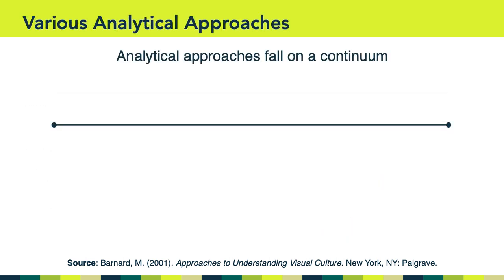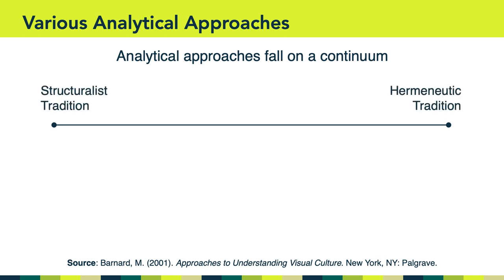Callow helped us understand that there are various approaches to analyzing and thinking about images in visual culture. Drawing on the work of Bernard, Callow argued that all analytical approaches fall on a continuum. This continuum is anchored by the structuralist tradition on one end and the hermeneutic tradition on the other. Some of you may be unfamiliar with these terms, but don't let the vocabulary throw you off. They're really simple ideas — they're all about how we know what we know and where we derive meaning when we're looking at visual content.